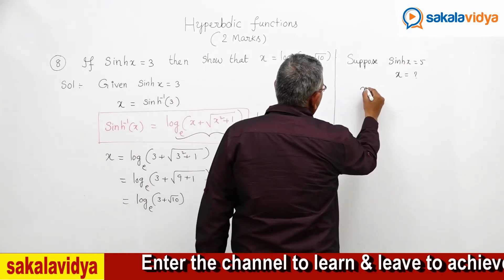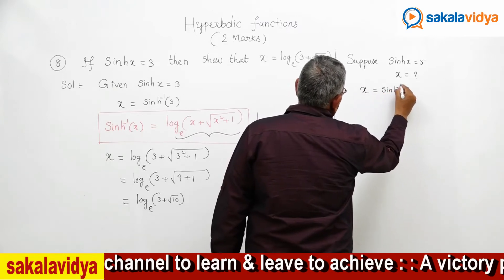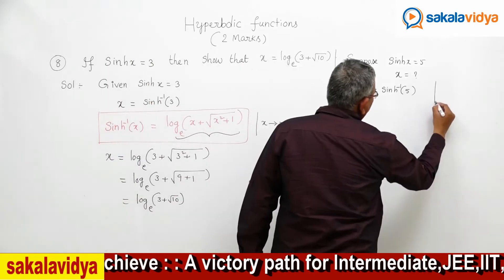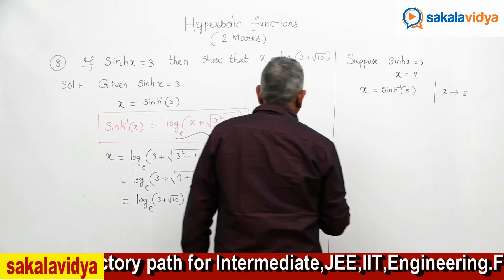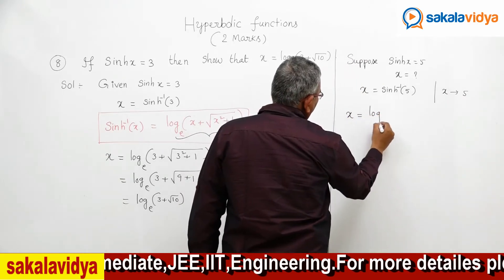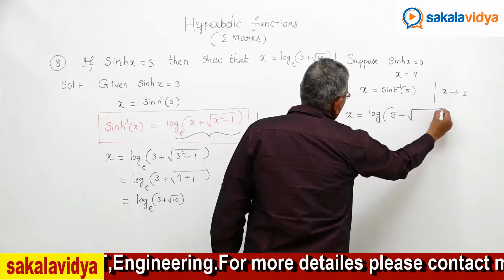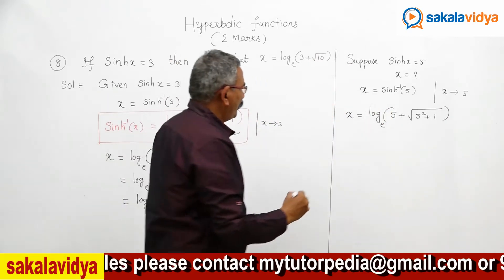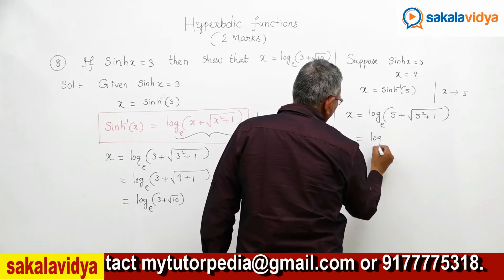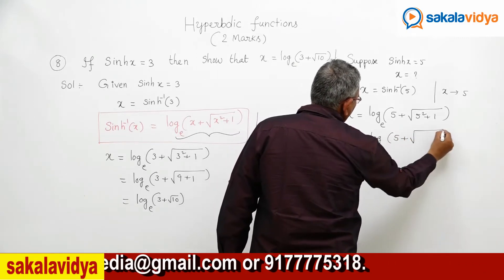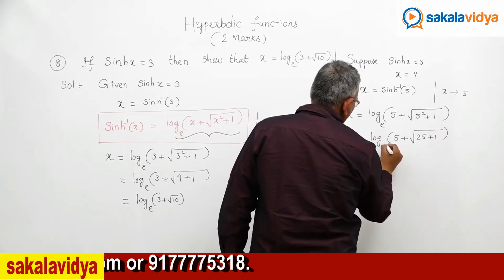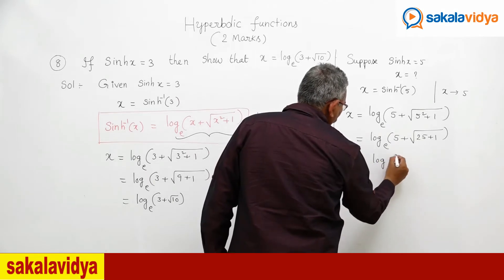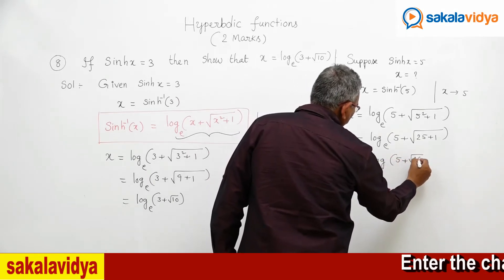Here x is equal to sinh inverse of 5. Using the same principle, x is replaced by 5. We get x equals log of 5 plus root of 5 squared plus 1, to the base e. This equals log of 5 plus root of 25 plus 1, to the base e, which equals log of 5 plus root 26, to the base e.